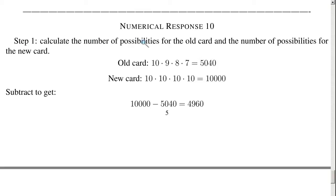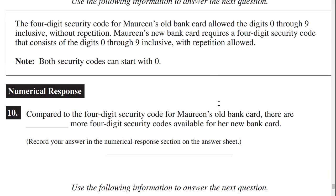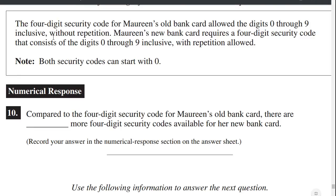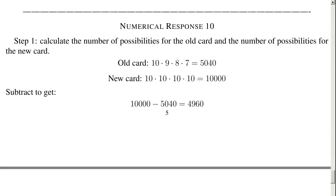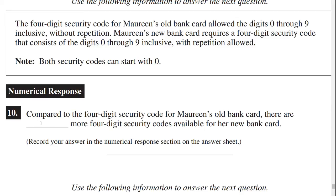Step 1: calculate the number of possibilities for the old card and the new card. For the old card, there is a 4-digit security code with digits 0 through 9 without repetition. So: first digit 10 possibilities, then 9, then 8, then 7. 10 times 9 times 8 times 7 is 5,040. For the new card, you can repeat digits, so there are 10 possibilities for each of the four digits: 10 times 10 times 10 times 10 equals 10,000. The difference: 10,000 minus 5,040 is 4,960. So there are 4,960 more 4-digit security codes under the new system.